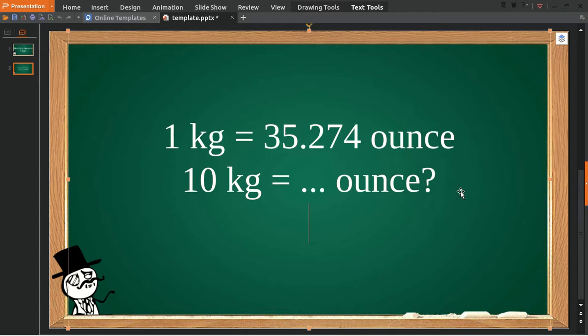10 kilogram is equal to how many ounce? To solve the problem you need to multiply 10 with one kilogram, and then 10 again multiply with this number.